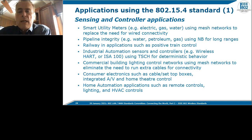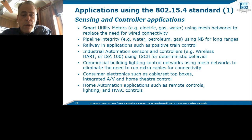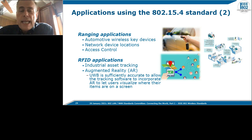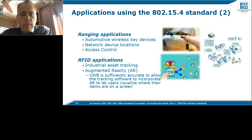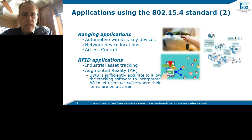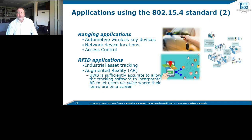Additional applications include home automation such as remote controls, lighting and HVAC controls, and ranging applications. Automotive wireless key devices are now coming into effect with 802.15.4 UWB, along with the ability to determine where a network device is and for access control — so you only access a door when you're right at it. Regarding ultra-wideband, Pat, can you explain what UWB is and how it differs from typical modulation schemes?